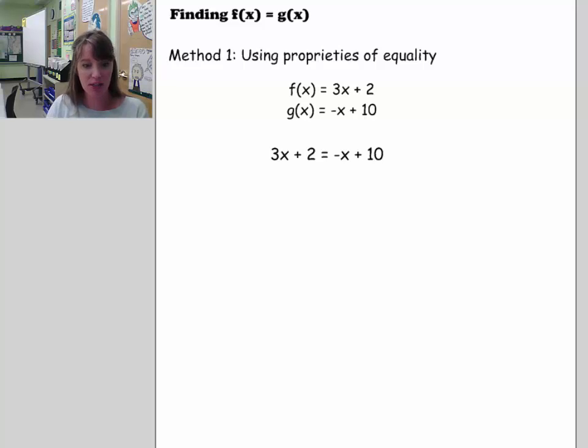Method number one is taking your two functions and actually just setting the expressions equal to each other. So here we have f(x) and g(x). What I'm going to do is take each expression, like this one right here and this one right here, and I'm going to set them equal to each other. Because what I'm looking for is an ordered pair that satisfies both of them.